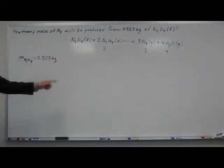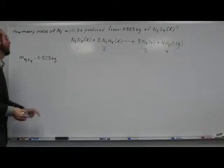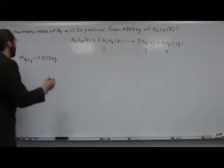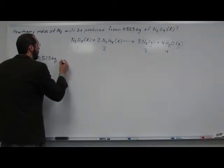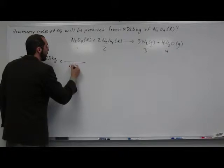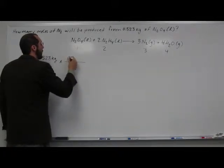We're going to have to put this into grams first, so we can use the molecular weight of dinitrogen tetroxide to figure this problem out. So we have to remember that 1 kilogram is 1,000 grams.